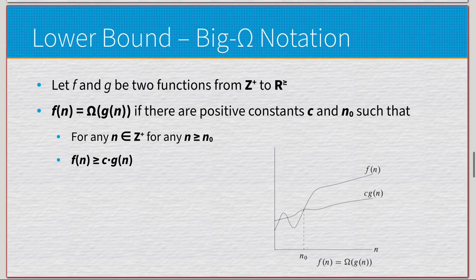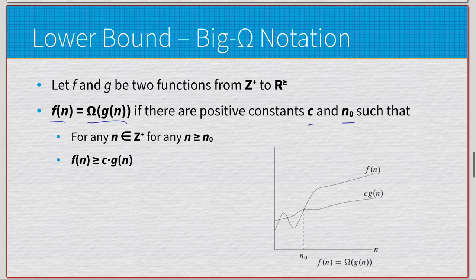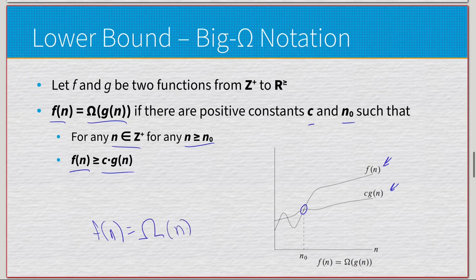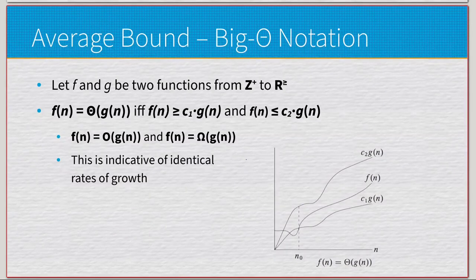For the lower bound, Big Omega notation: let f and g be two functions mapping positive integers to real numbers. We say f(n) = Ω(g(n)) if there exist positive constants c and n₀ such that for any positive integer input greater than or equal to n₀, f(n) is greater than or equal to c times g(n). This is the lower bound — f(n) is above g(n) after the crossover point, so f(n) = Ω(g(n)).